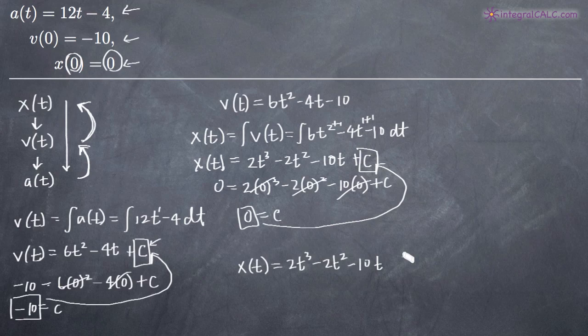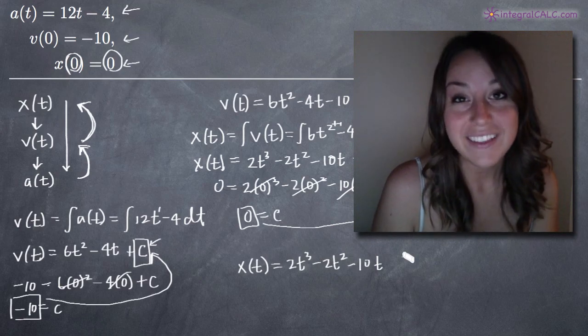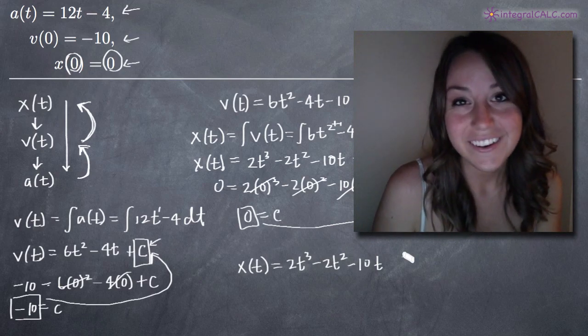So to recap: we started with the acceleration function, took the integral to get the velocity function, and plugged in the initial condition v(0) = -10 to solve for the full velocity function. Then we took the integral again to get the position function and used x(0) = 0 to find the full position function. Just a series of initial value problems. I hope this video helped — see you in the next one!